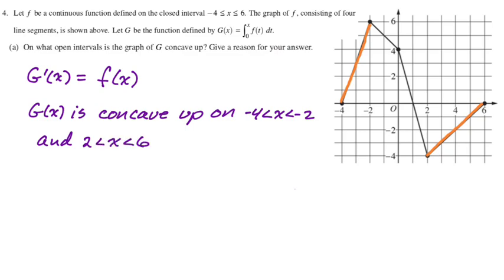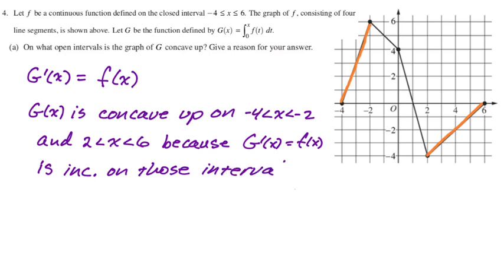And then we want to give a reason for that. So I'm going to say because g prime of x, which equals f(x), I never know how paranoid to be about that, so I just repeat it ad nauseum, is increasing on those intervals. So my reasoning is that g prime is increasing. I have the graph of g prime, so I want to base everything on that if I can. All right, and that's part A.